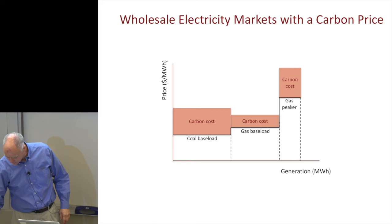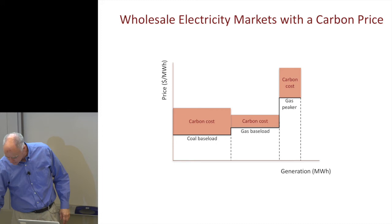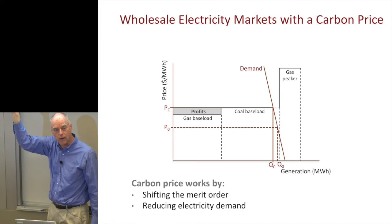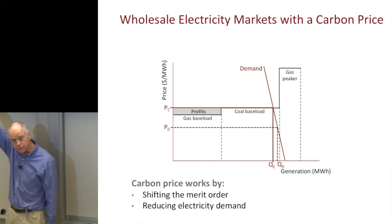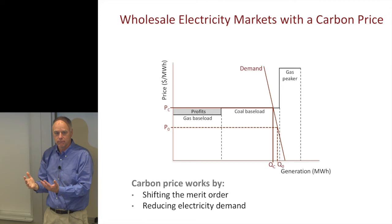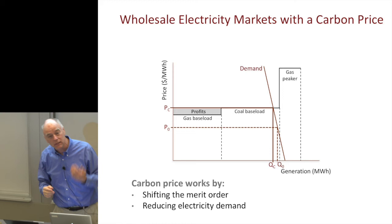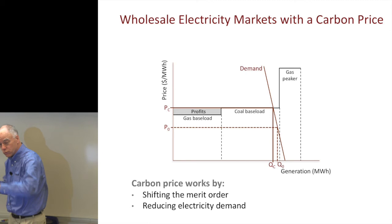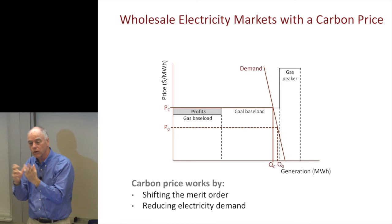There are two mechanisms reducing emissions: first, raising offer prices for all units increases electricity prices, shifting demand in; second, switching the merit order so lower-carbon gas displaces higher-carbon coal. Both effects work together when carbon is priced. In the game, we can set carbon prices high enough to demonstrate this dispatch order change clearly, even if the real world requires more careful calibration.